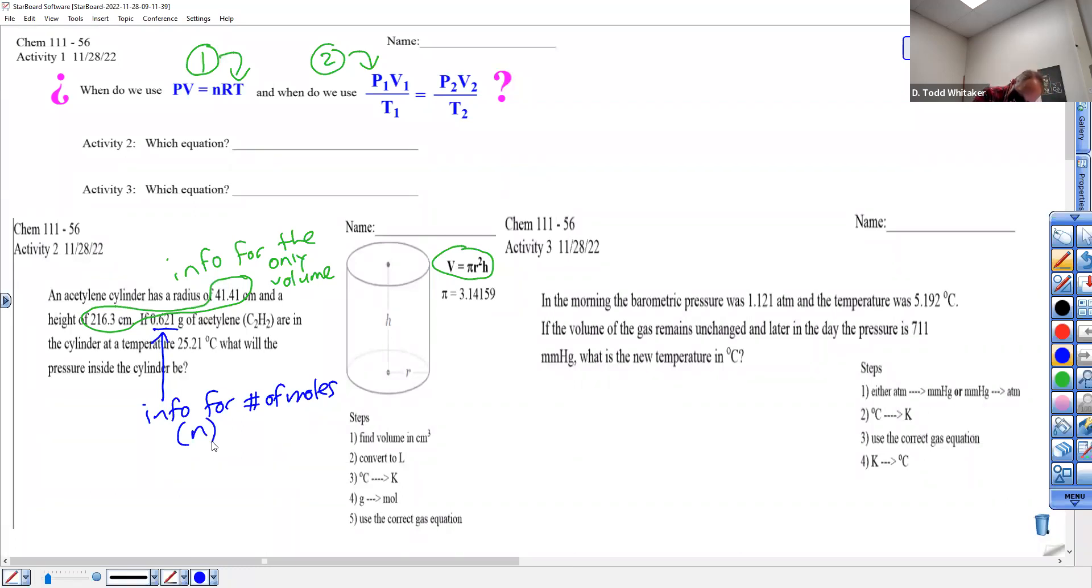This is info, this is the only temperature. Why do I keep saying only? There's only one temperature, there's only one volume. Right away I know which equation to use. Is it number one up top or number two? With only one set of conditions, it's number one.